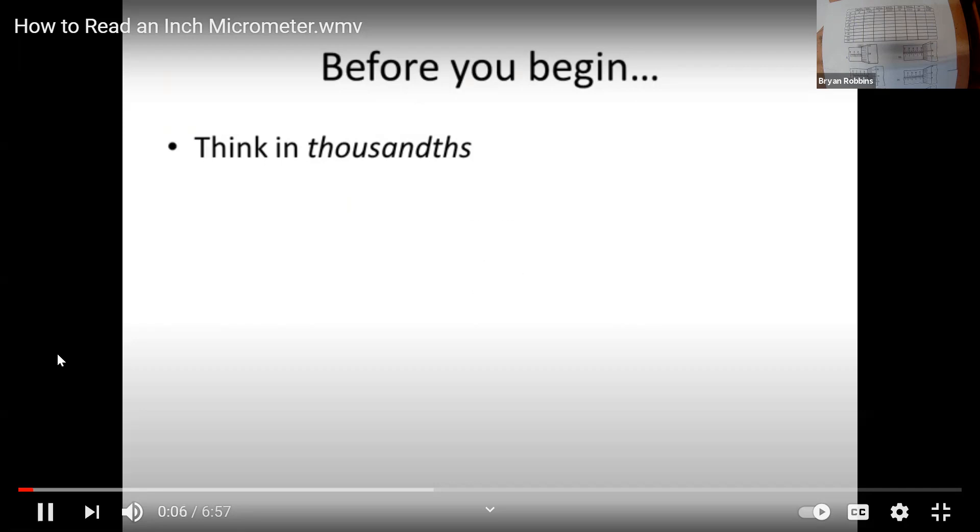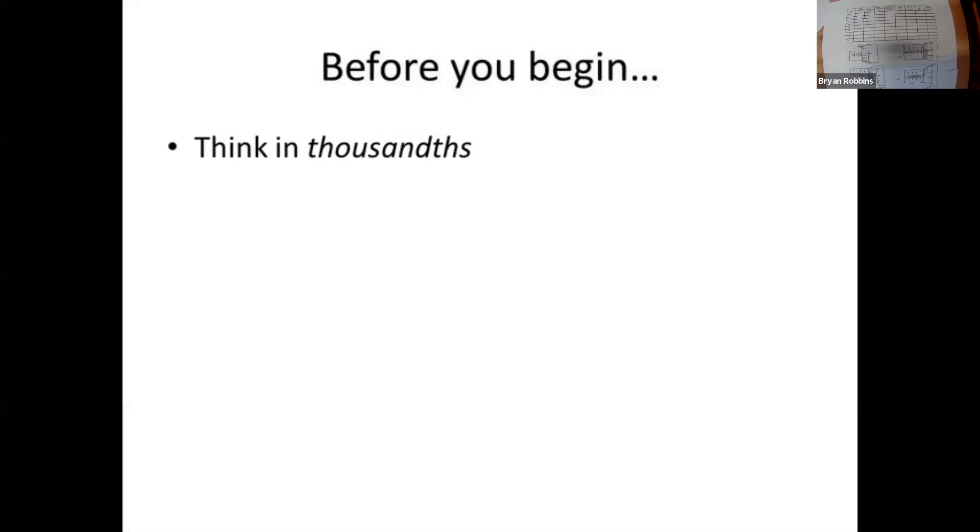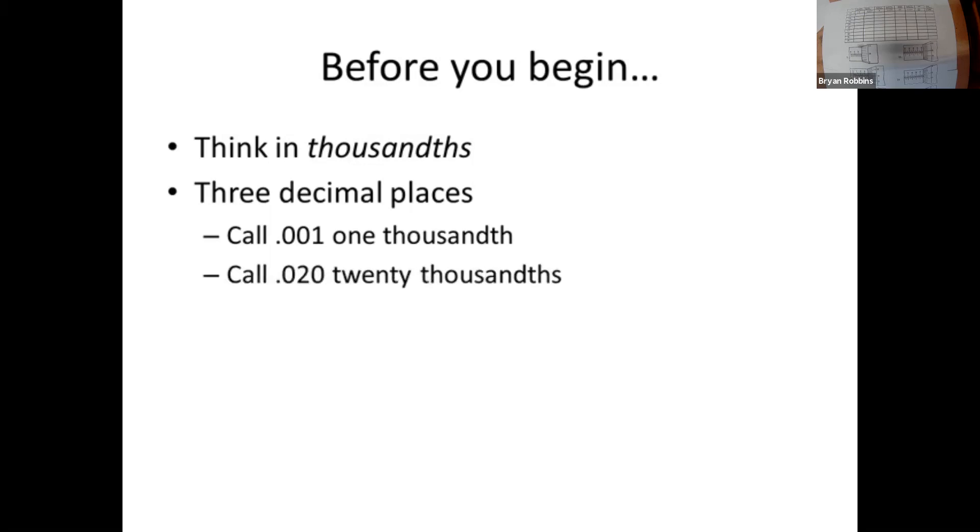Before we start talking about how to read a micrometer, especially an inch micrometer, we want to think in thousandths of an inch. So this is three decimal places. If we just always set our thought process to three decimal places, we'll see that a micrometer will work pretty easily. This is the way that machinists think. So you're going to think of .001 as one or one thousandth. .020 is 20 thousandths. .9 would be 900 thousandths.